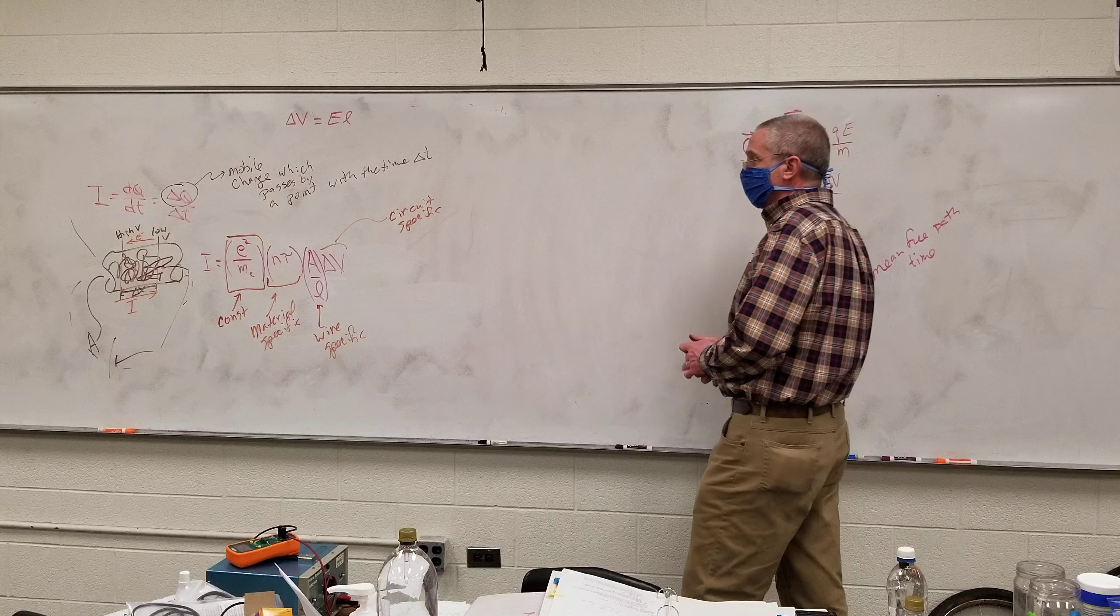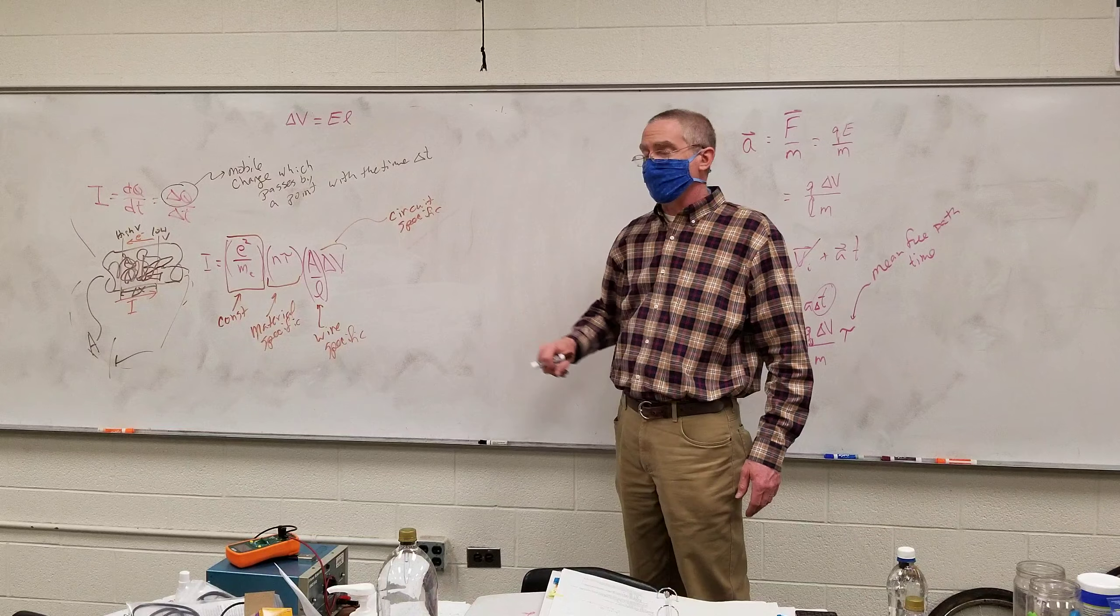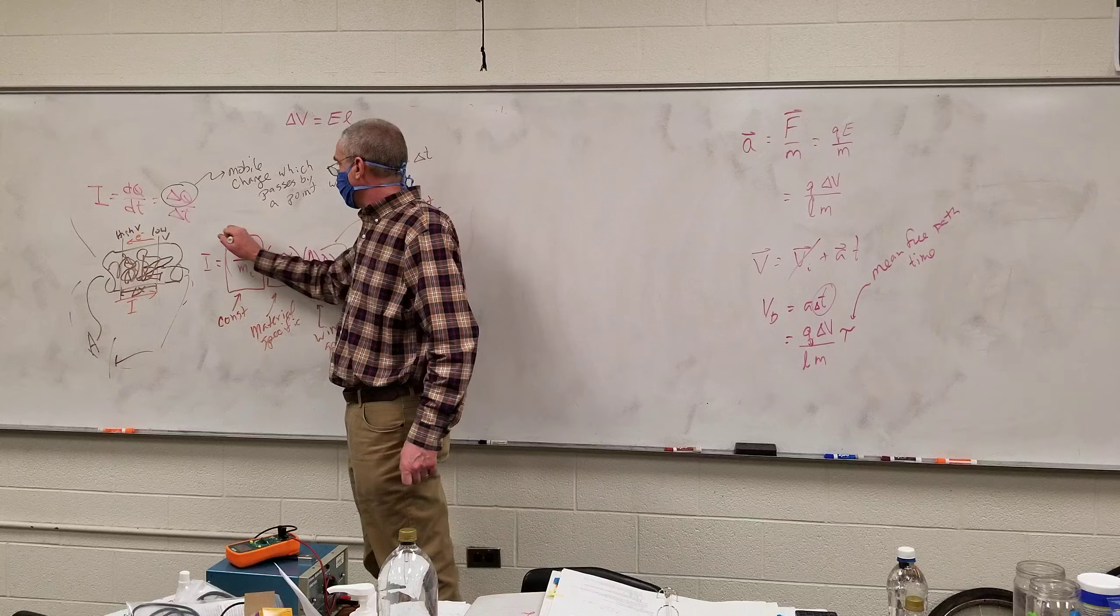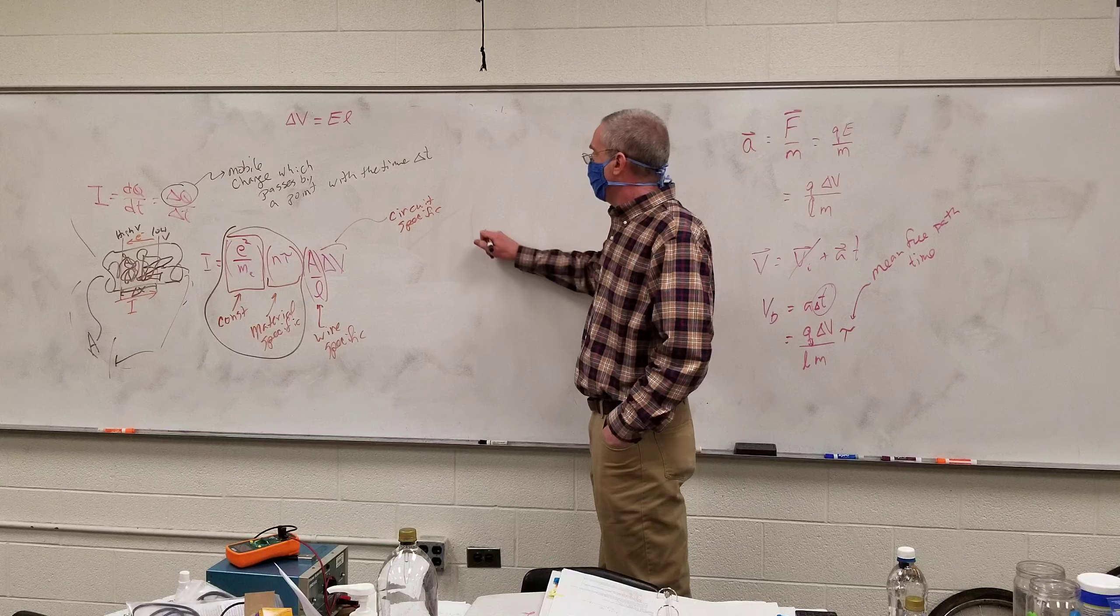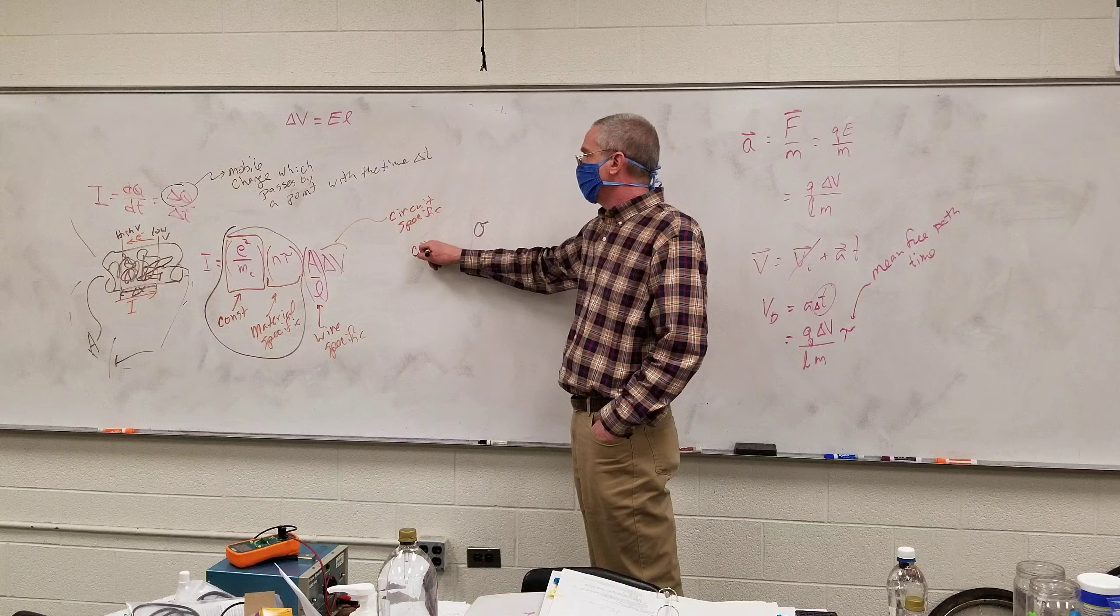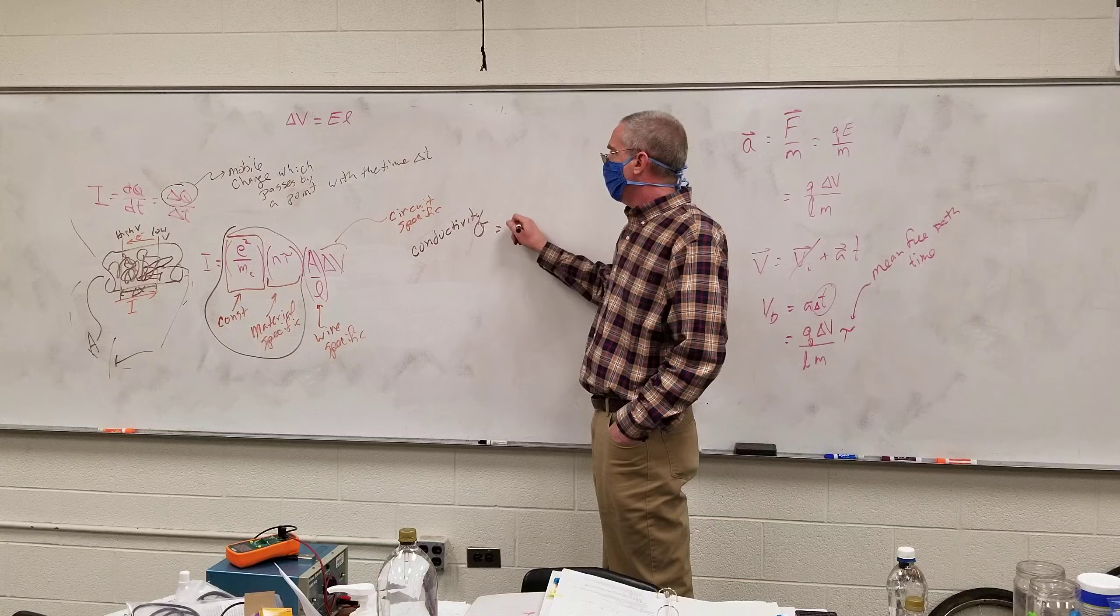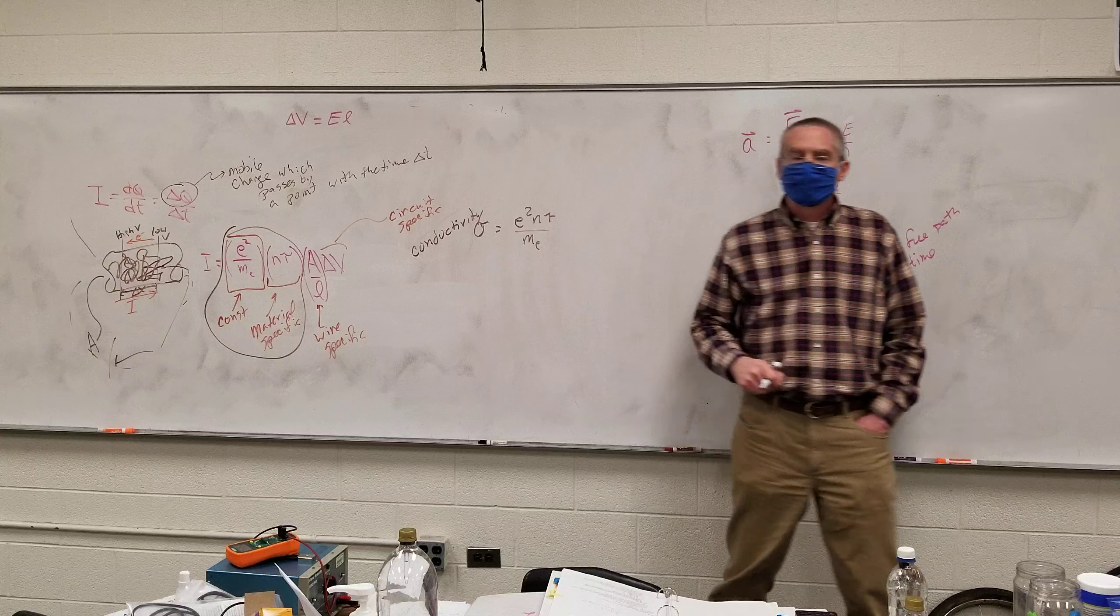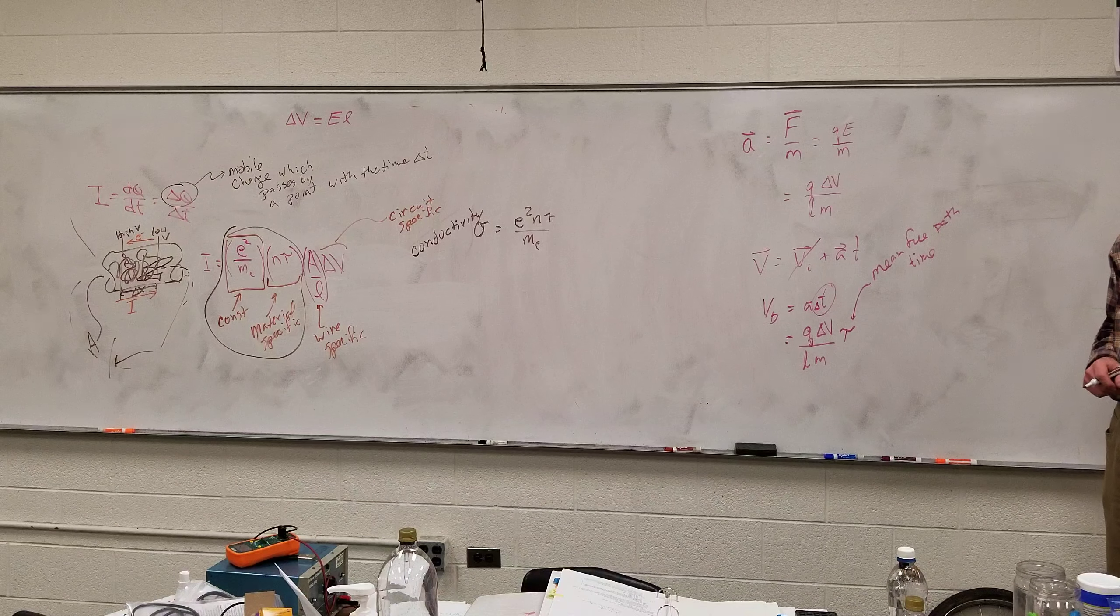And now we get into the actual simplification. The e squared over the mass of the electron, as we said before, is constant as far as we're concerned. This is material specific. And so they basically lump all that stuff together and call that conductivity, sigma. Yes, because we've run out of letters. It's called the conductivity, and that is equal to e squared N tau over M sub e. Do you want to know the conductivity of an aluminum wire? Well, you just go to the table, look for aluminum, and look it up.